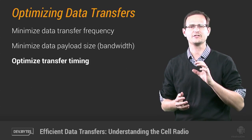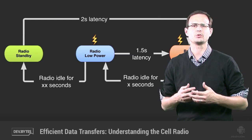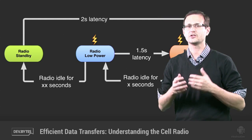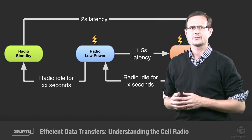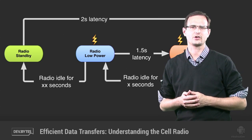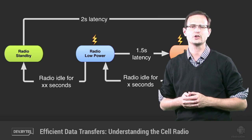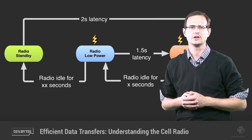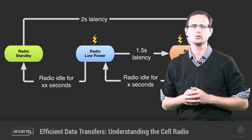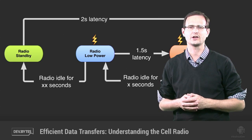That means understanding the cell state machine. In order to conserve power, the cell radio isn't kept on permanently. It goes through a series of state transitions in order to compromise between low latency data transfers and minimizing the impact on battery life. It begins in standby mode, where it's storing minimal power until an app initiates a data transfer. At that point, it transitions to full power mode, a process that takes around two seconds before performing the transfer. Rather than dropping back to standby immediately after the transfer is completed, the radio will remain in full power mode for a set tail time, just in case further transfers are initiated within that window.